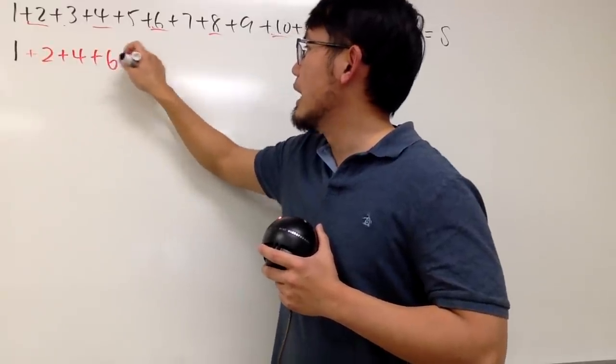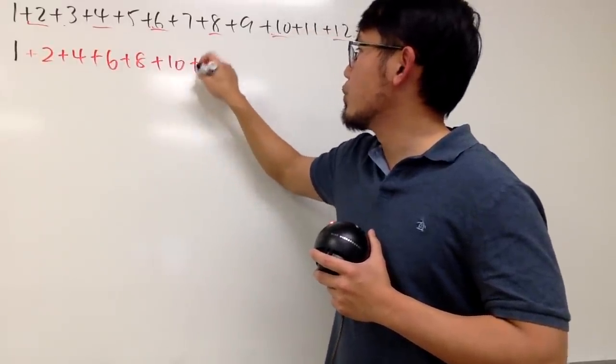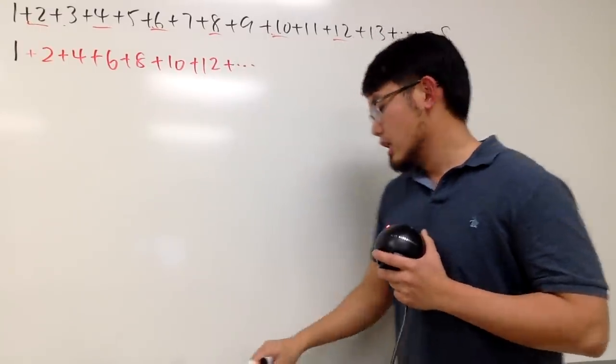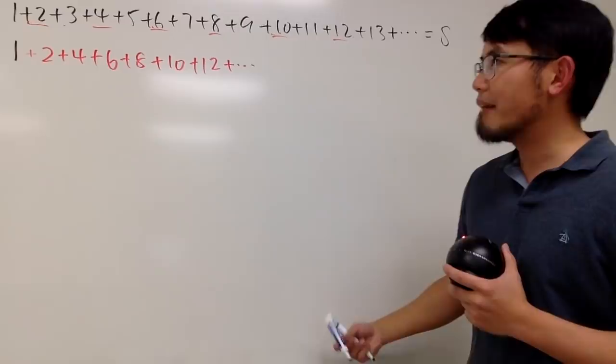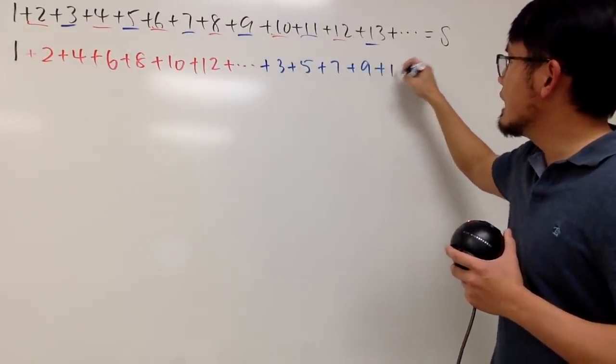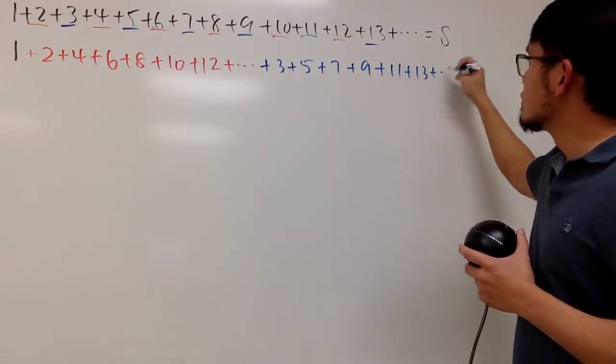And let me just put it right here. 2, 4, 6, 8, 10, 12. And, of course, we're adding them up. And let me just put on a plus, dot, dot, dot. Well, we also have the left overs. Namely, 3, 5, 7, 9, 11, 13, and so on.